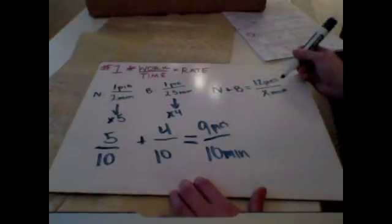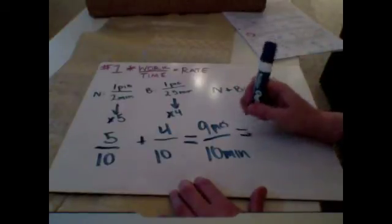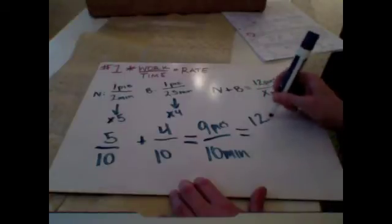Now, the question clearly asked when I eat twelve pies in X minutes. So I'm setting my fractions equal to each other.